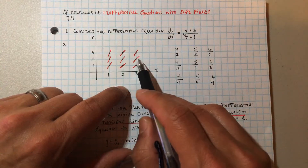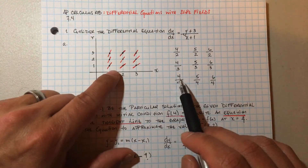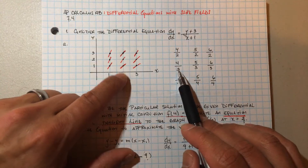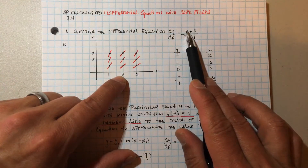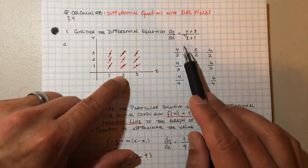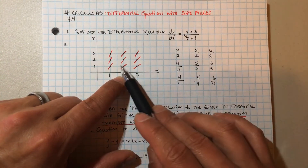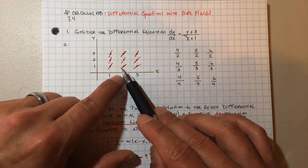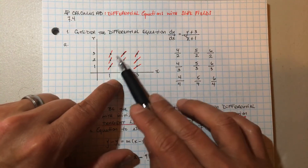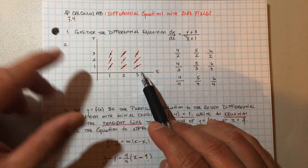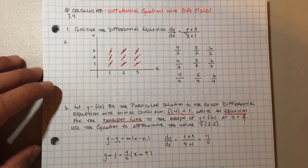What they want is they don't want to see a negative slope when it has to be positive. For (2, 1), when x is 2 and y is 1: 2 + 1 = 3 on top, 1 + 3 = 4 on the bottom, giving 4/3. You do your best to graph the slope, do that with all the points, and you get your slope field.